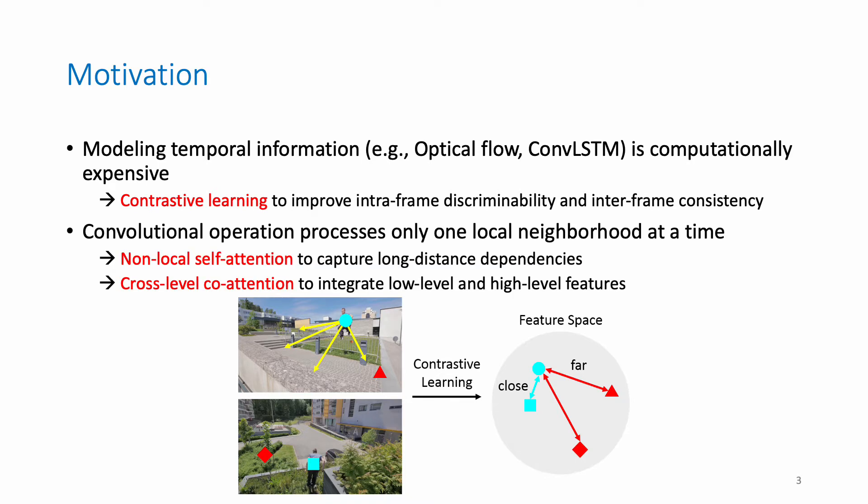One of the limitations of CNN-based models is that convolutional operation processes only one local neighborhood at a time. To overcome this issue, we propose the non-local self-attention to capture long-distance dependencies.